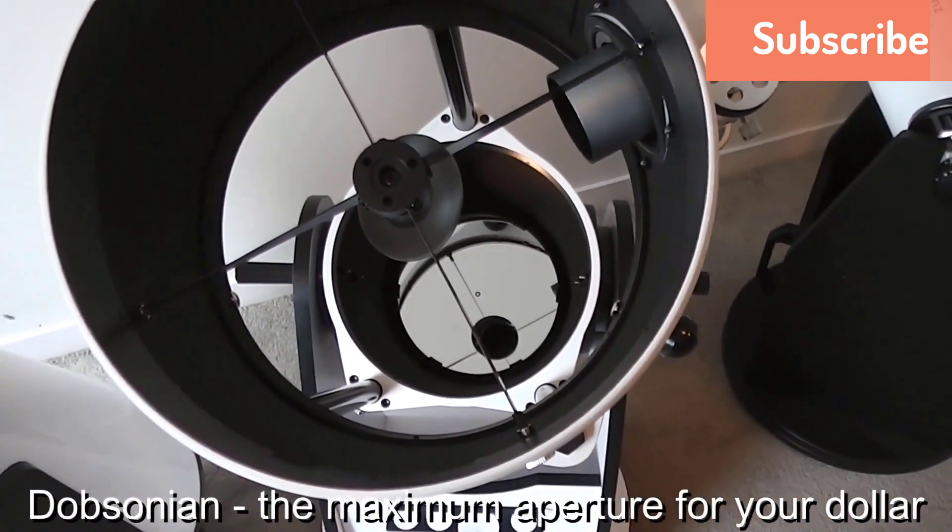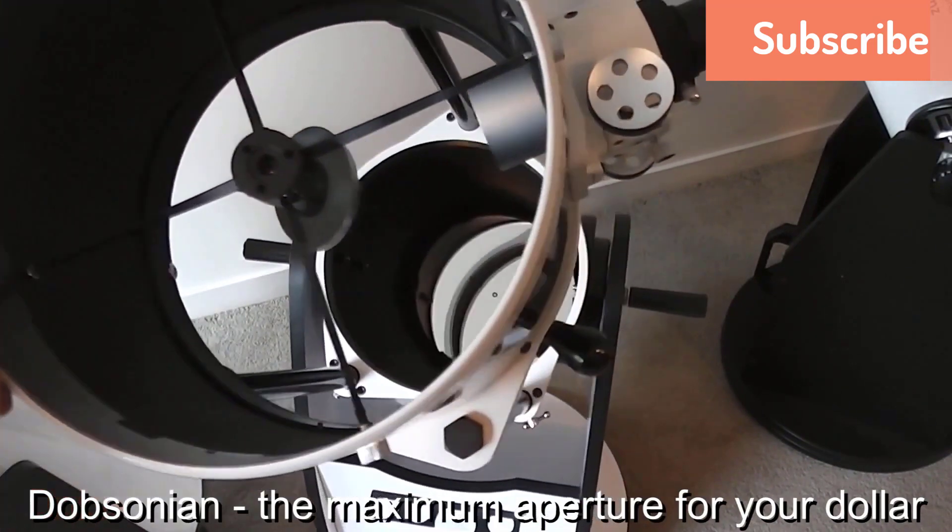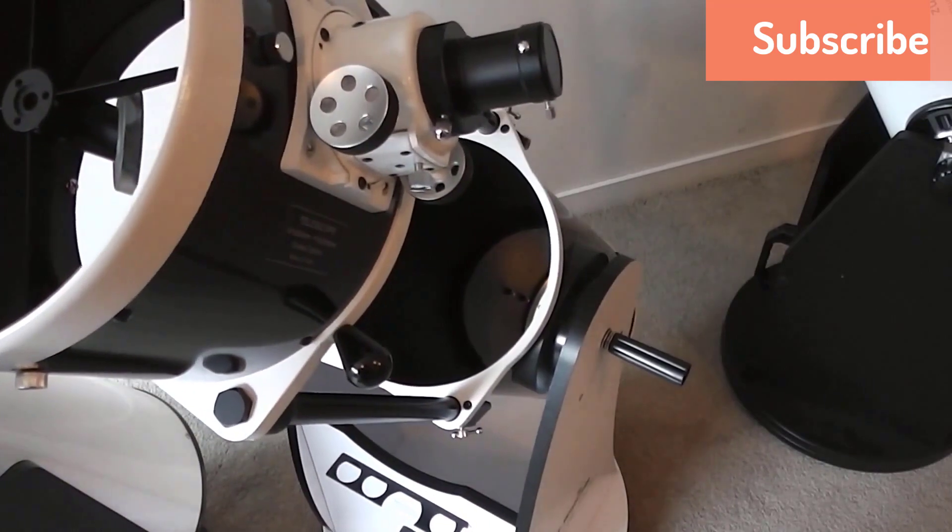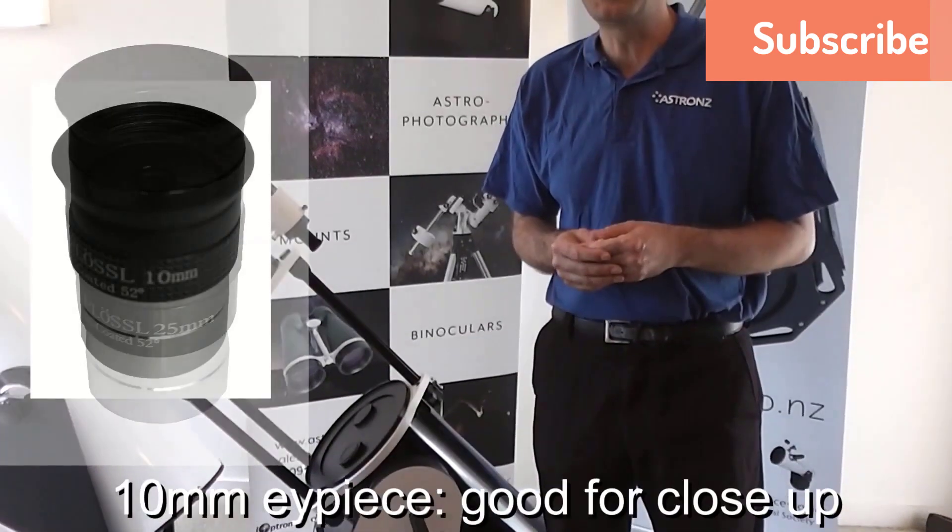To top things off and make this the best 12-inch Dobsonian telescope on the market, it has two different sizes of 4-element Plossl 1.25 inch eyepieces: one is 25 millimeters and the other is 10 millimeters. The telescope attaches to the base with a solid rocker mount to keep it nice and steady for the best viewing possible.